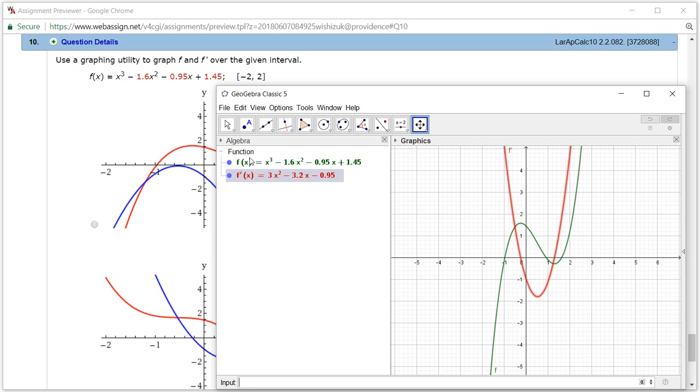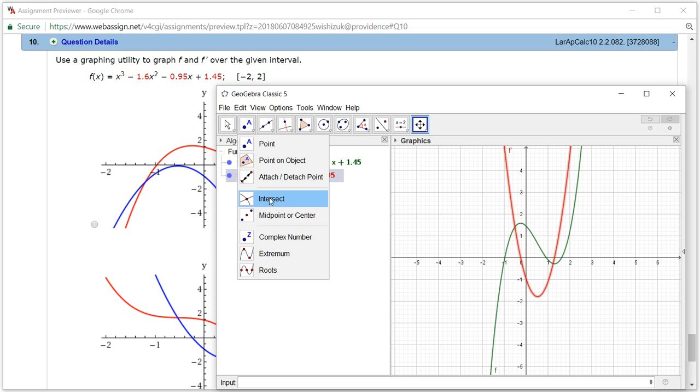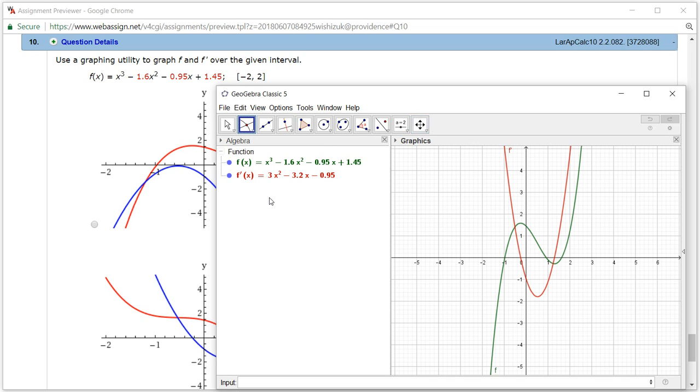So what we can do is we can kind of find it geometrically. So I'm going to go down here and look for here. This is called the intersect function.